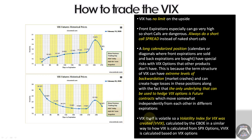VIX itself is volatile, so a volatility index for VIX was created — VVIX — calculated by the CBOE in a similar way to how VIX is calculated from SPX options. VVIX is calculated based on VIX options and represents the volatility of VIX. When things start going haywire and the market starts collapsing, not only does VIX go higher, but the volatility of VIX goes higher as well — a double whammy if you're short calls on VIX.